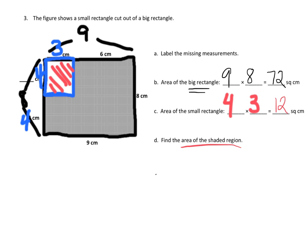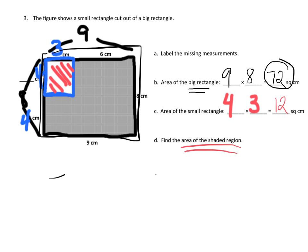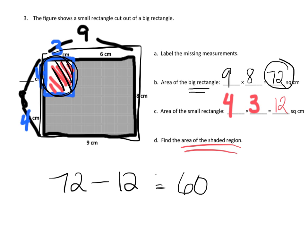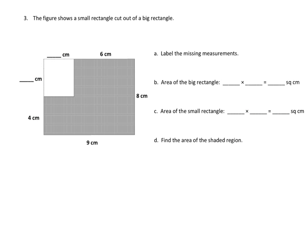Now, to find the area of the shaded region: 72 would be the entire thing, and then we subtract 12 because that piece isn't shaded. So 72 minus 12 — 72 minus 10 is 62, minus 2 more is 60. The area of the shaded region is 60 square centimeters.